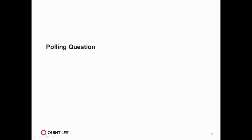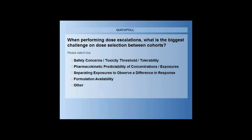Yes, thank you for that, Seth. We do have a polling question at this section, and I'm launching it on the screen right now. The audience can vote on the question in real time just by clicking on your screen. The question we have for today is: when performing dose escalations, what is the biggest challenge on dose selection between cohorts? Your options are: safety concerns, toxicity threshold, or tolerability; pharmacokinetic predictability of concentrations or exposures; separating exposures to observe a difference in response; formulation availability; or other.